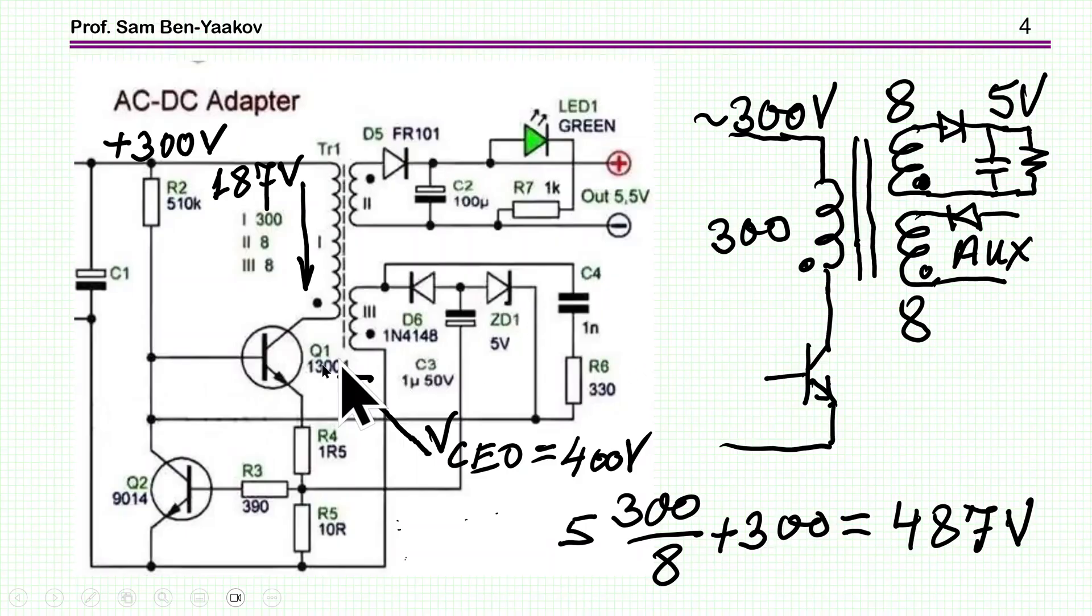And there is a major problem here, which I really don't understand. This transistor is specified for a maximum voltage ratio of 400 volt. Now, if we have 5 volt here, and the ratio is 300 to 8, then when the transistor is off, we're going to have here the primary 187 volt. This is 5 times 300 over 8, plus the 300 volt. So it's already 487V, and this is without an overshoot, oscillation, etc. This transistor is specified for 400 volt. So I don't know if it's a mistake, or they are using this transistor and it seems to be working okay. This is just an issue that I don't know how to explain.